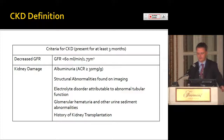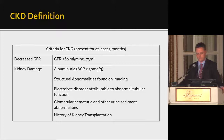CKD can also be defined by a number of other measures, including microalbuminuria, structural abnormalities found on imaging — though this is nonspecific and not well defined — electrolyte disorders attributable to abnormal tubular function, glomerular hematuria and other urine sediment abnormalities, and a history of kidney transplantation.